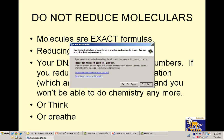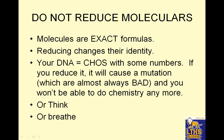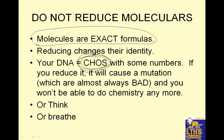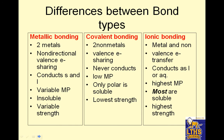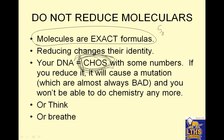Do not reduce molecular formulas. Molecular formulas are exact formulas — we need to learn that. Reducing molecular formulas changes their identity. Your DNA is basically just carbon, hydrogen, oxygen, and sulfur with some numbers. If you reduce it, it would imply that it's just this simple thing and not a big complex molecule — it could cause a mutation. Mutations are almost always bad. So never reduce them. For example, if I have S2O8, I never want you to write SO4. No, no, no, no.